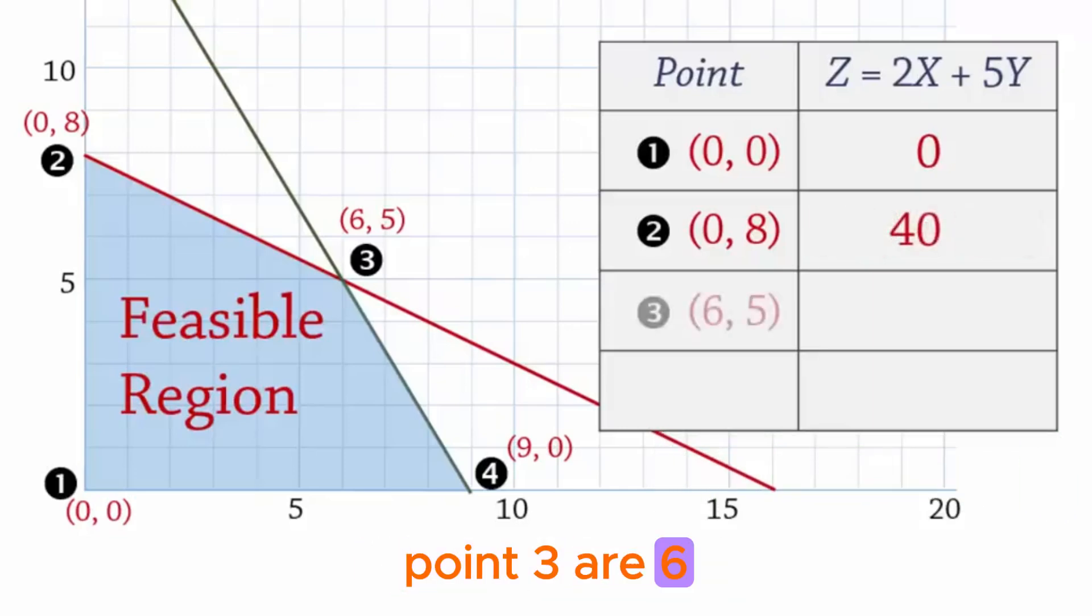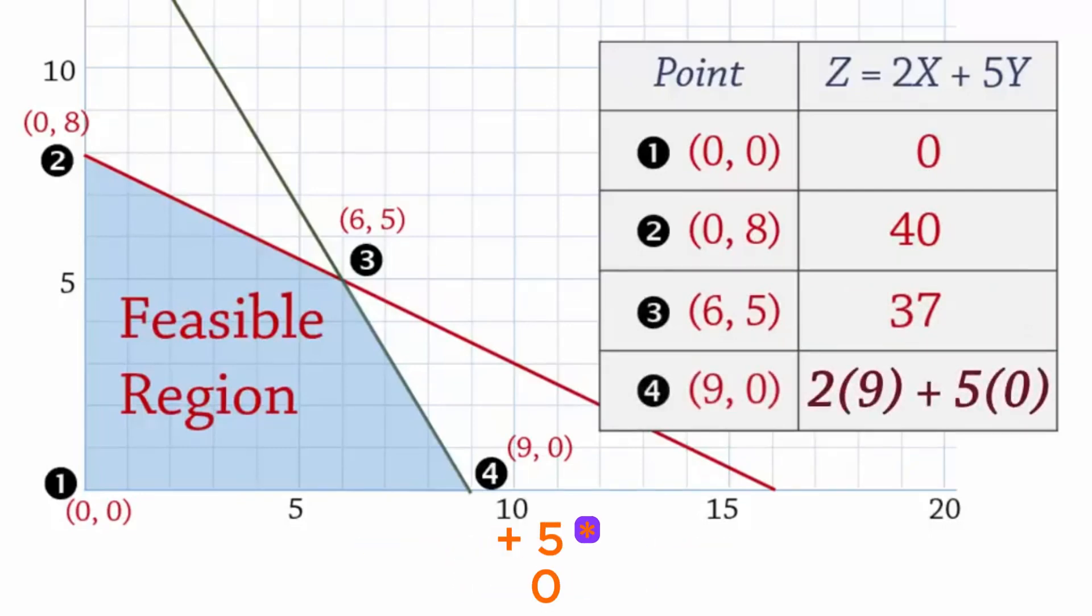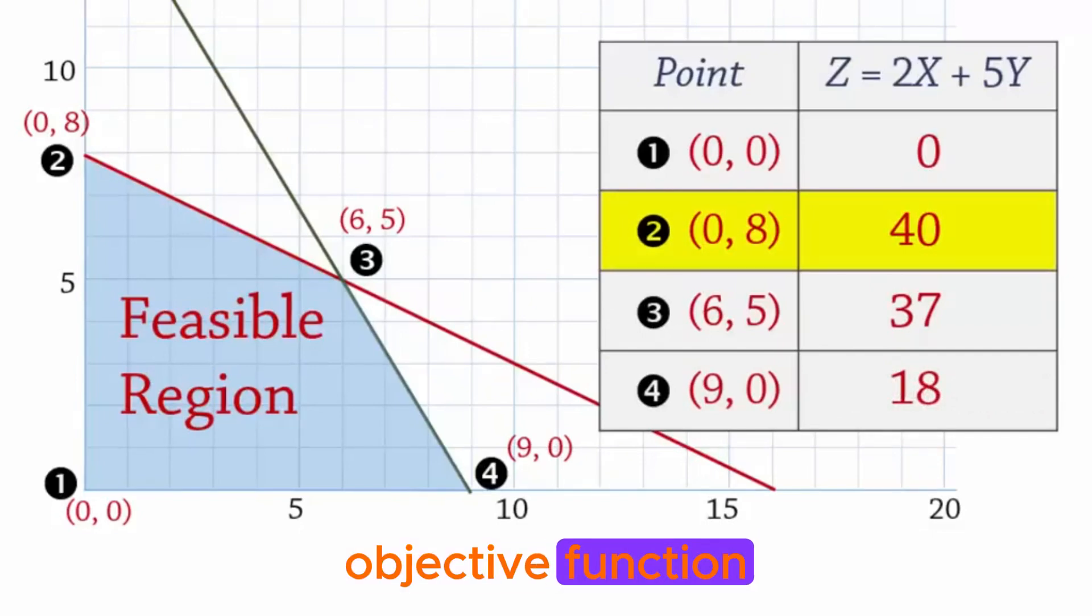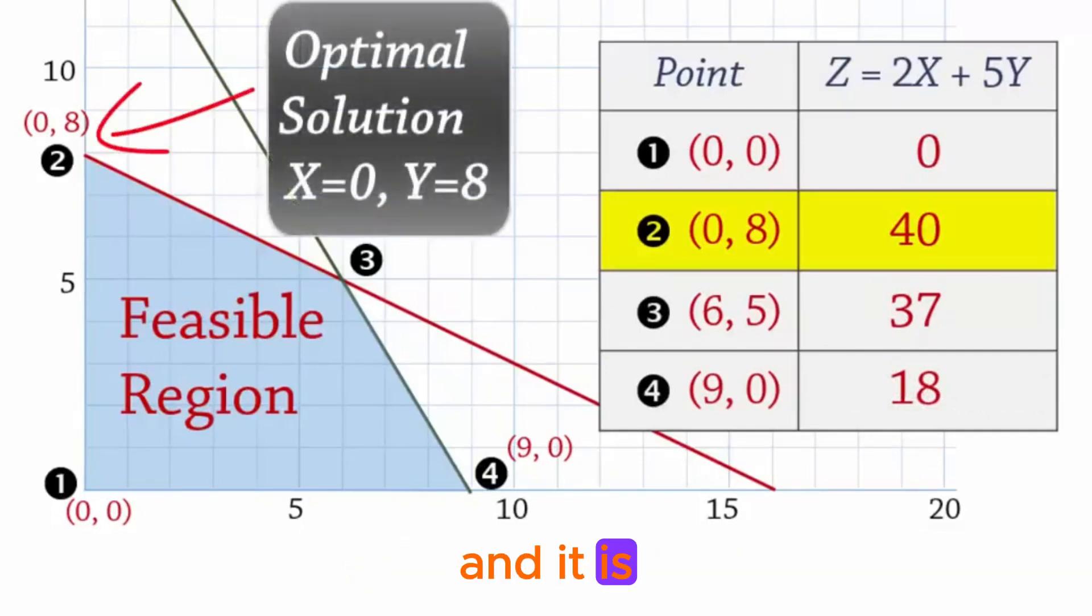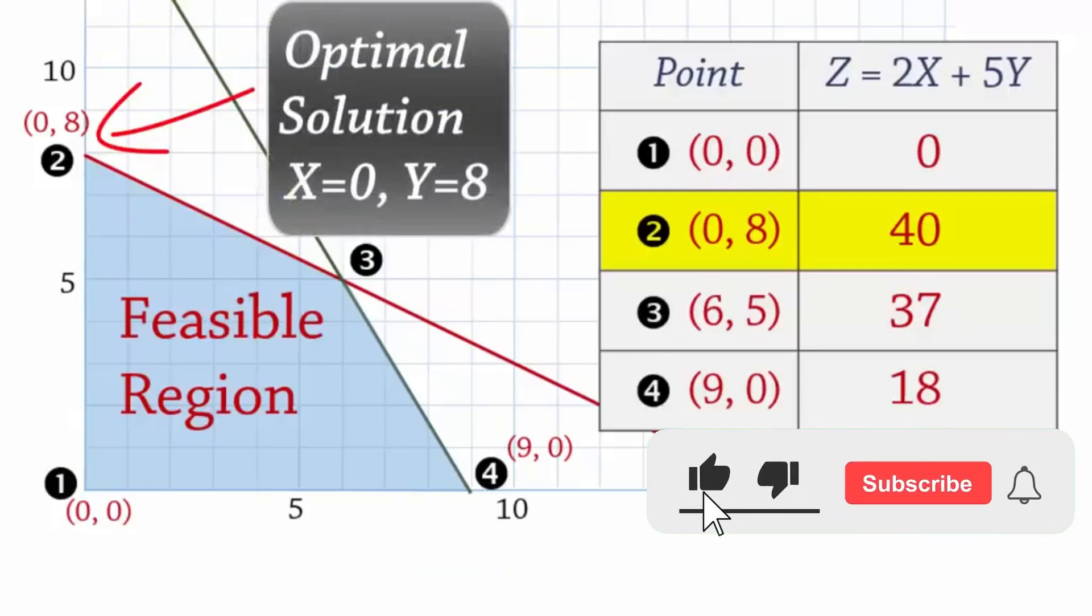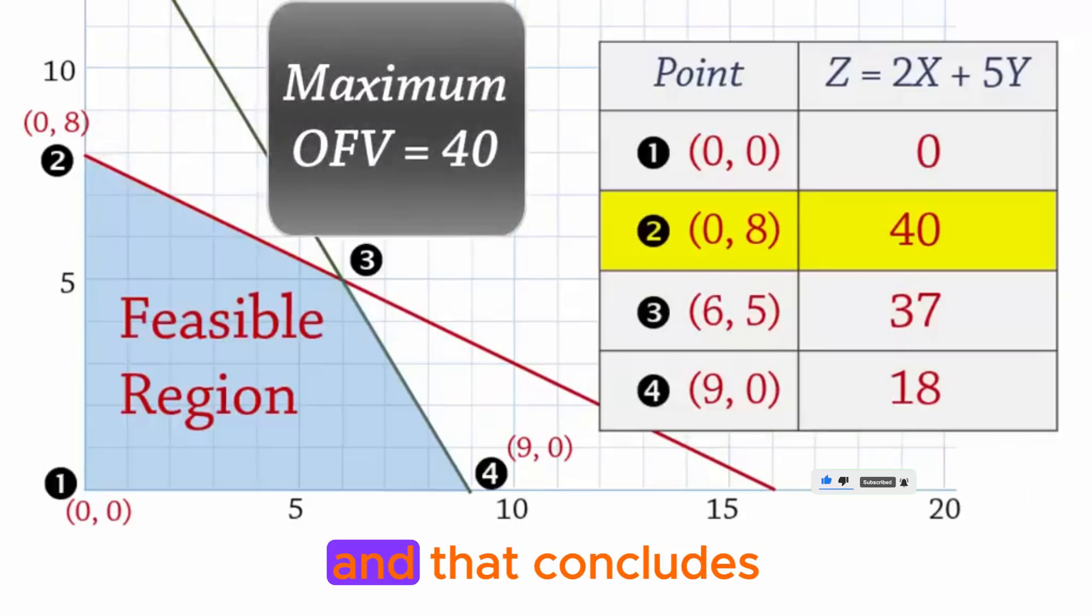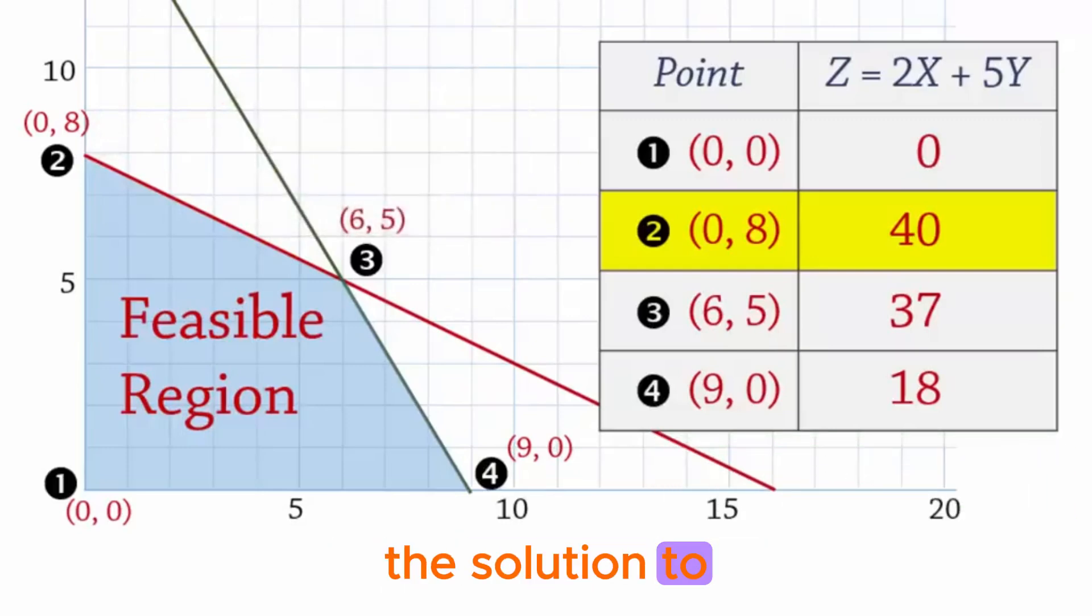The coordinates at point 3 are 6 and 5, so Z equals 2 times 6 plus 5 times 5 which equals 37. And finally, at point 4 with 9, 0, Z equals 2 times 9 plus 5 times 0 which gives 18. So here we have it, point 2 provides the highest value of the objective function. So the optimal solution occurs at point 2 and it is X equals 0 and Y equals 8, and the corresponding objective function value is 40. And that concludes the solution to this LP problem.